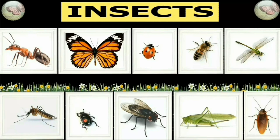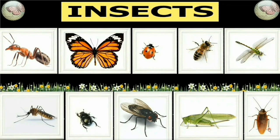What is the name of this insect? Beetle. Next. Which insect is this? Housefly. Next. What is this? Grasshopper. Next. Which insect is this? Cockroach.